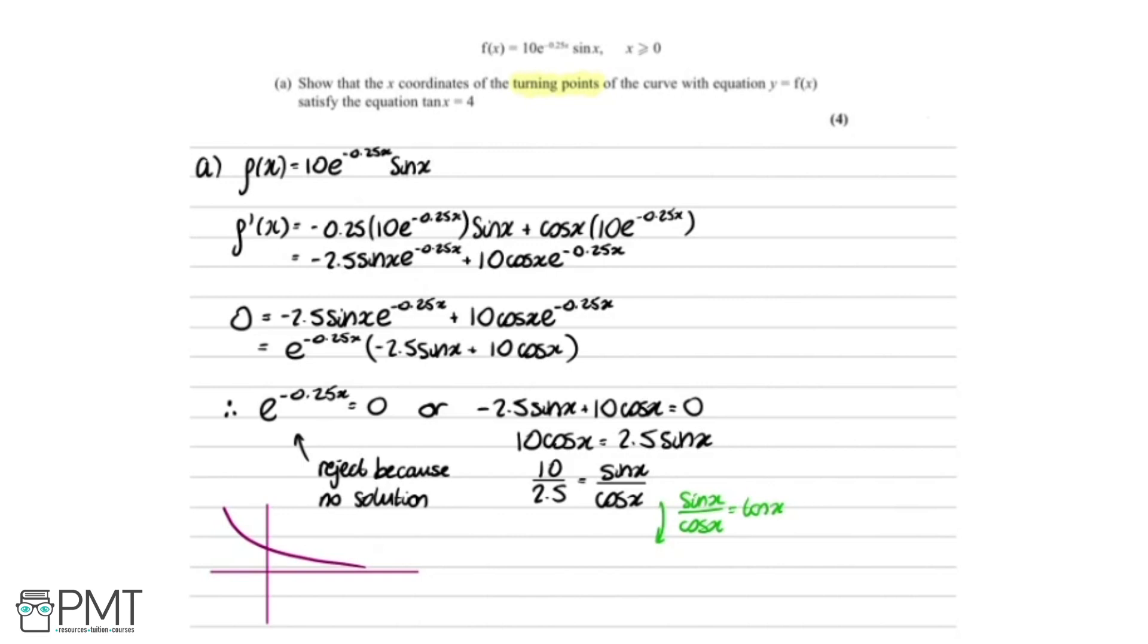I'm going to write them actually flip the other way around, so we're going to say tan x equals... And then if you put this into the calculator, you get 4, as needed.